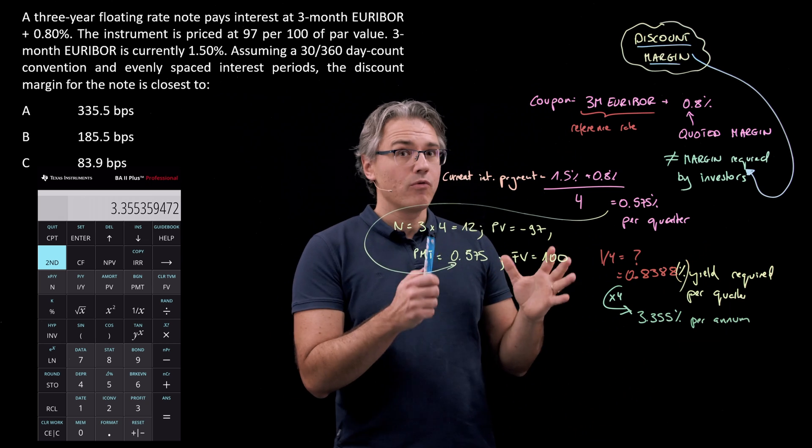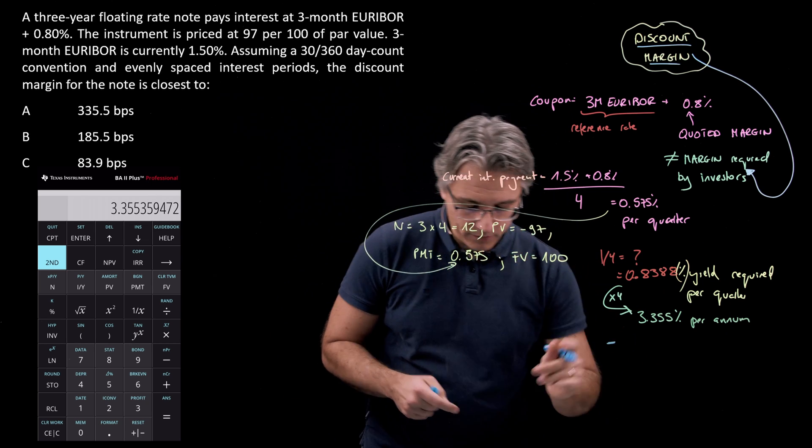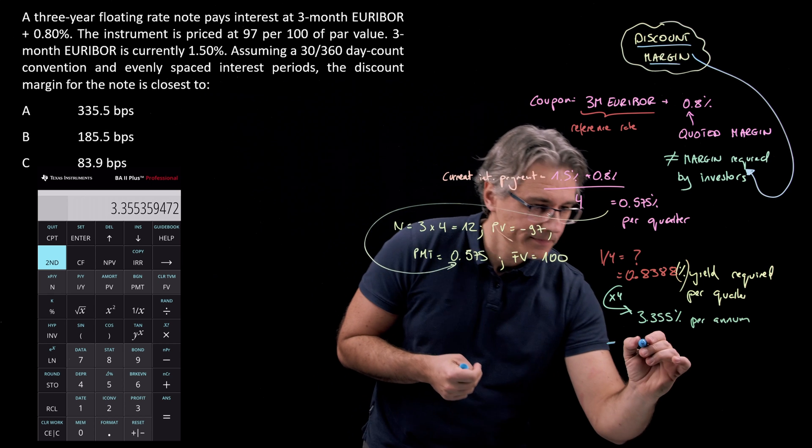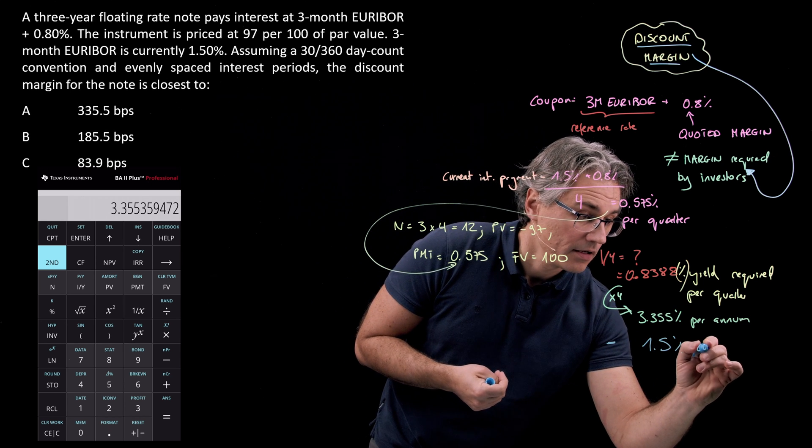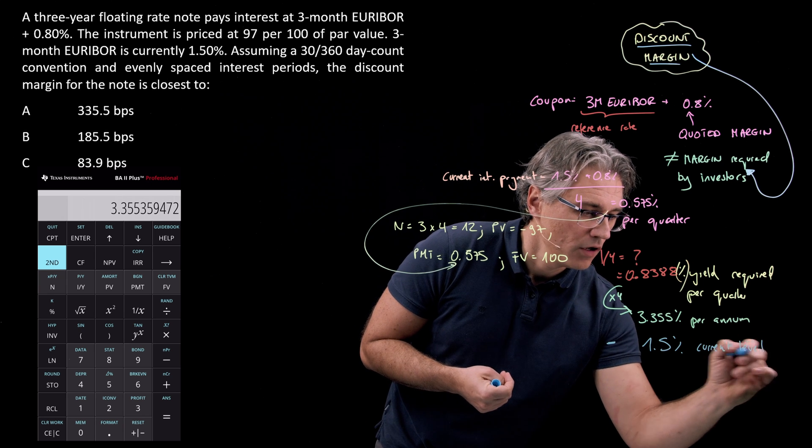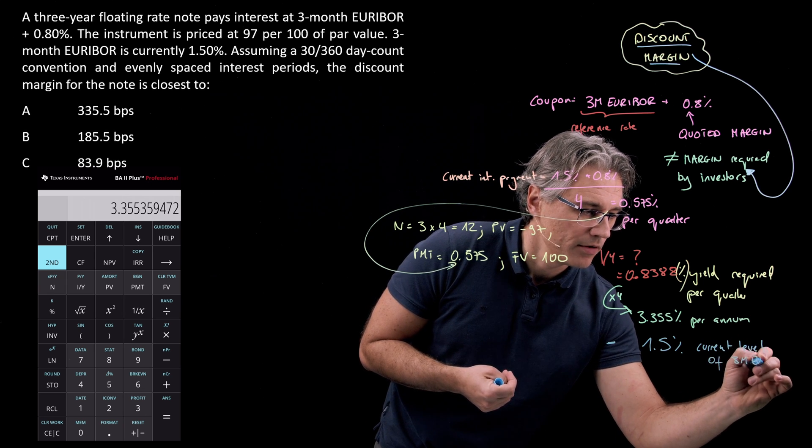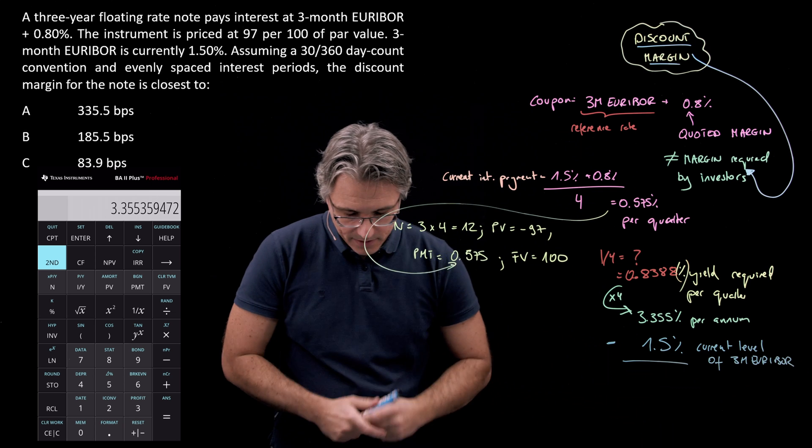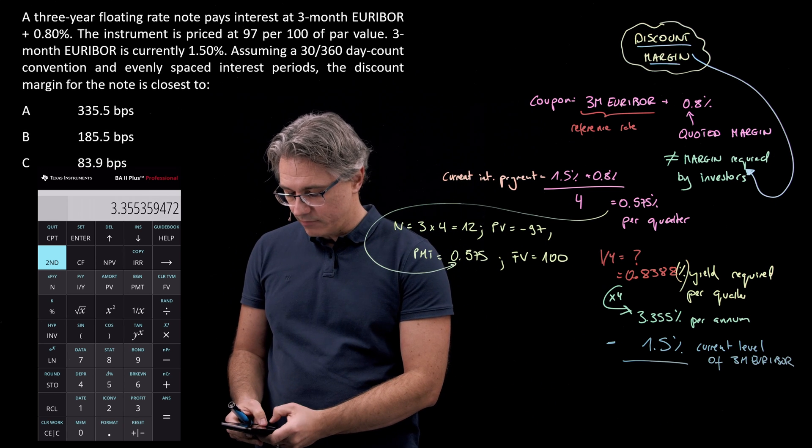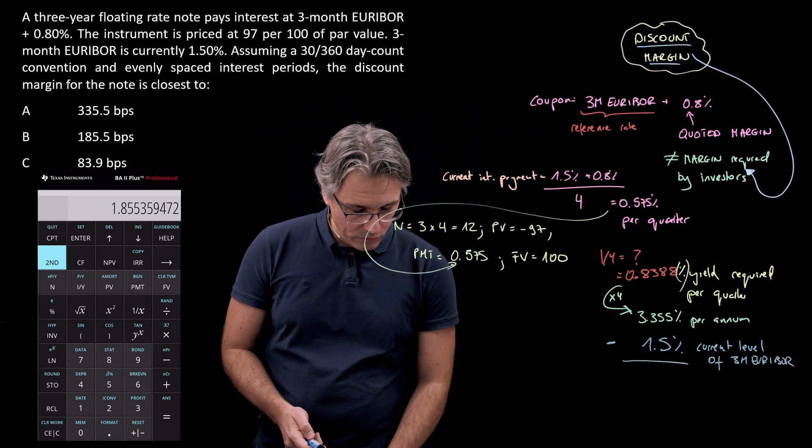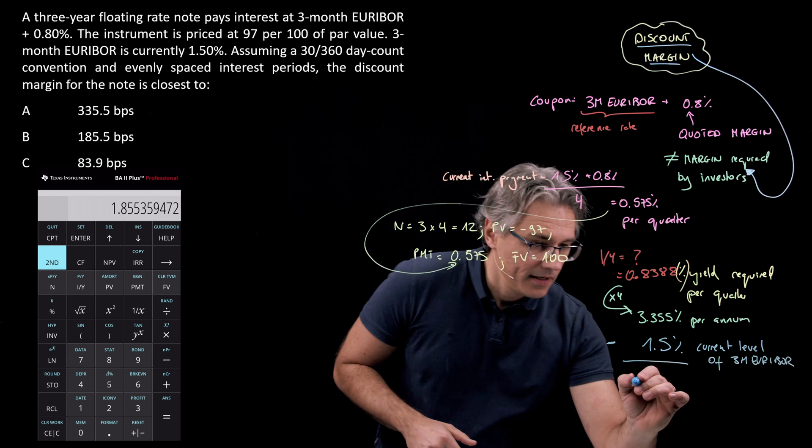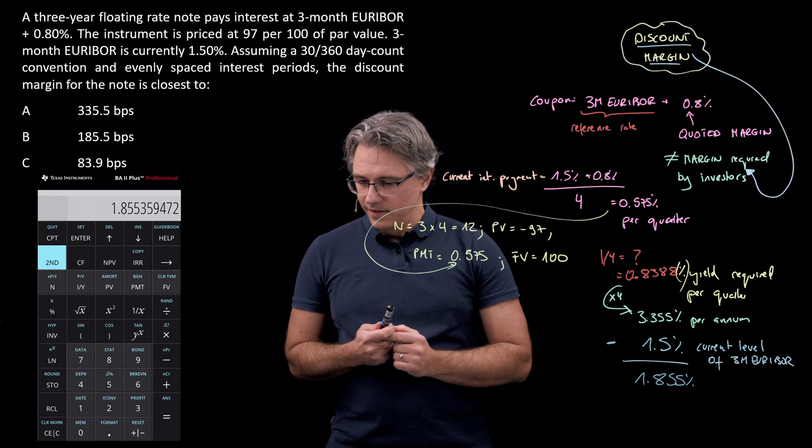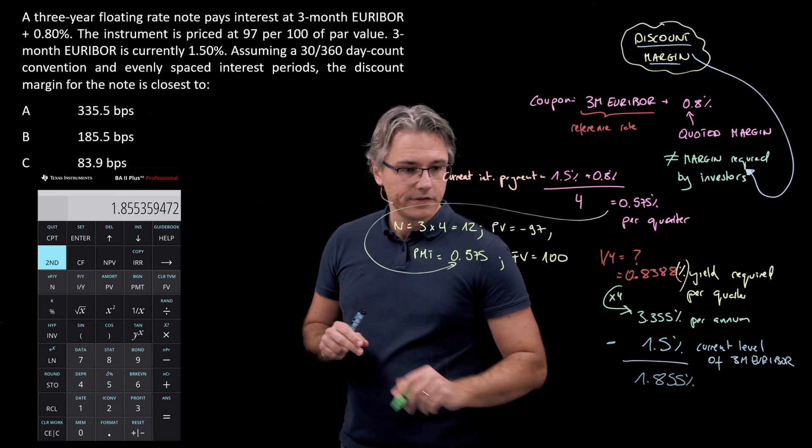From this required yield, we have to deduct the current level of EURIBOR. EURIBOR currently was 1.5%, so minus 1.5%—the current level of 3-month EURIBOR—because we're asked for the extra bit on top of EURIBOR. If I deduct 1.5% from the result, I get 1.855%, which is perfectly in line with answer B.